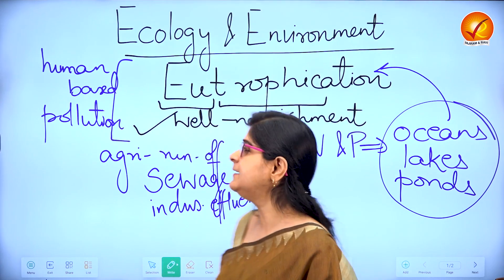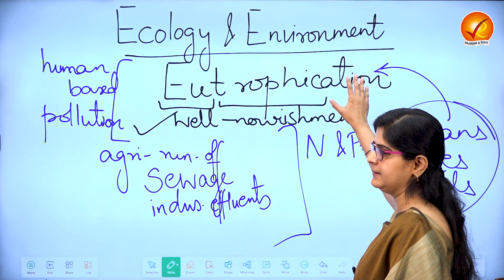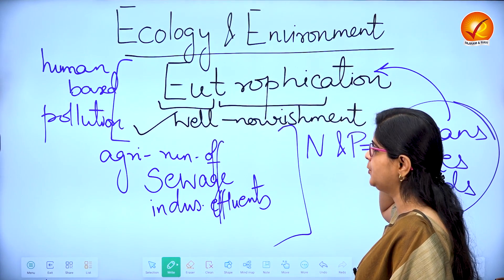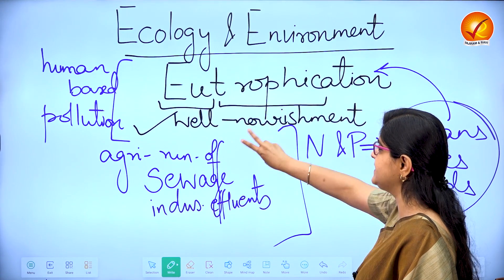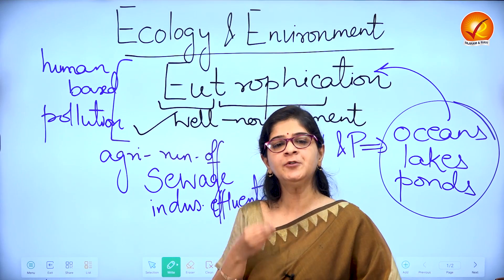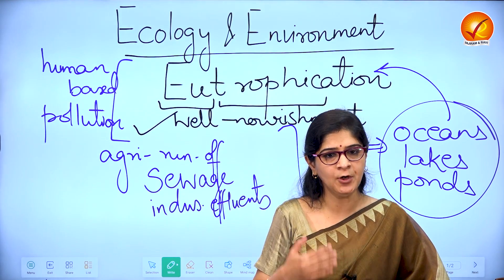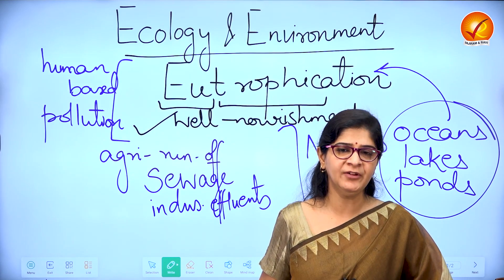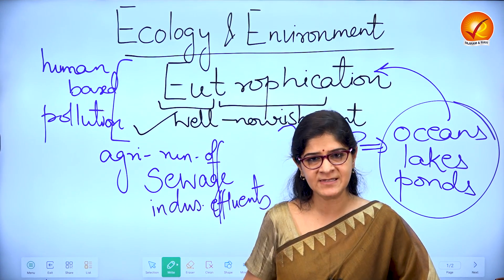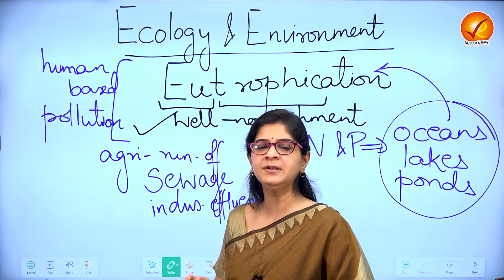Initially I said that eutrophication is a form of water pollution. So how does this become water pollution? Because when I say 'well nourished,' it sounds like it must be a good thing happening for the water bodies, but not so — it's not taken as a good thing. Therefore, we need to understand the reasons why eutrophication takes place.